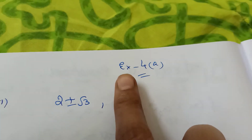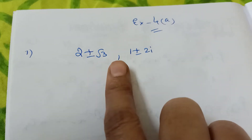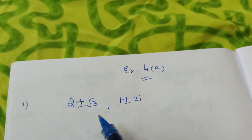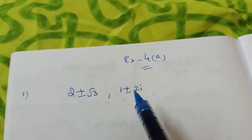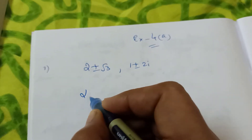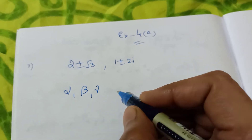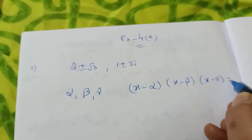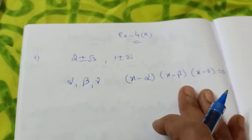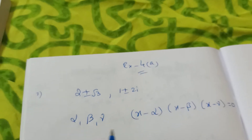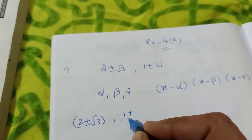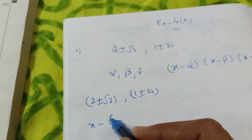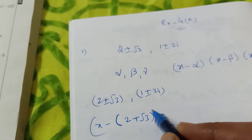Now I'm explaining how to form a polynomial equation given roots. Suppose the roots are 2 ± √3 and 1 ± 2i. With the ± signs, there are four roots total. If three roots alpha, beta, gamma are given, the equation is (x − alpha)(x − beta)(x − gamma) = 0. With four roots, write all four factors similarly — and don't forget to use brackets.